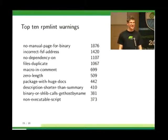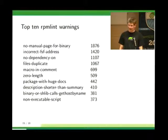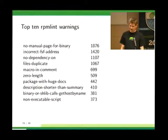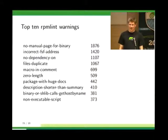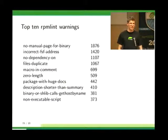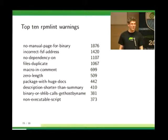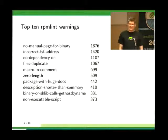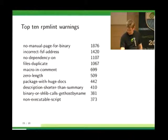The top 10 RPM-Lint warnings are pretty unimpressive. The most common is no manual pages — we should probably discuss whether this check is still useful since everyone ignores it. Also the incorrect Free Software Foundation address, which just means the upstream package didn't include the most recent copying file from the FSF. No dependency on is mostly Perl because the test is actually broken and reports lots of Perl packages. Nothing really exciting.